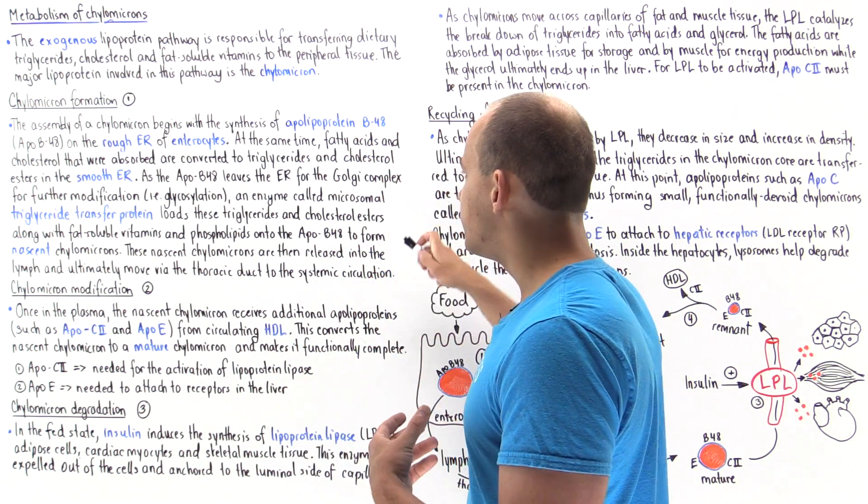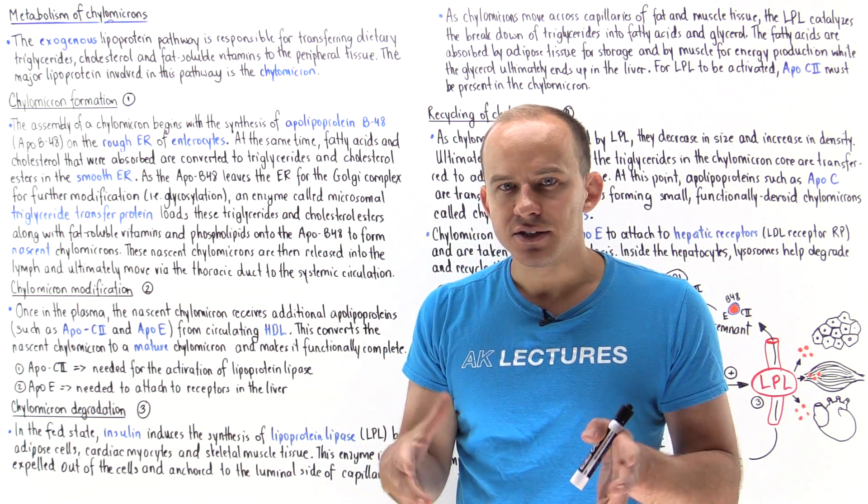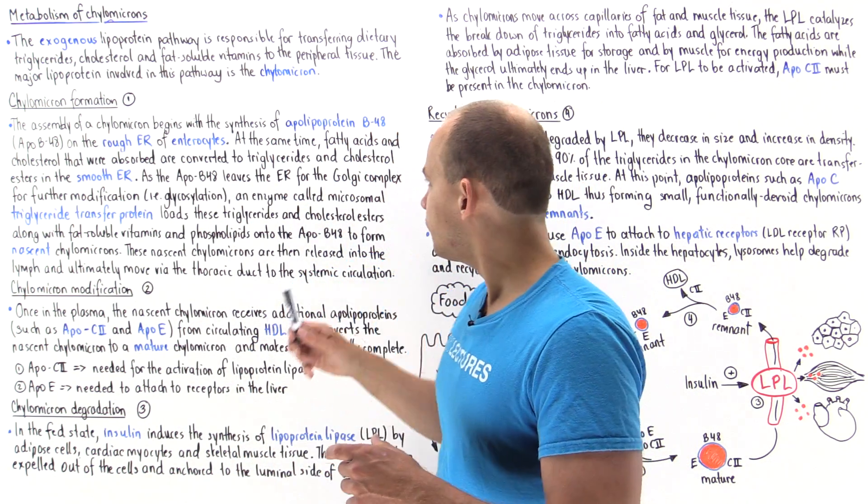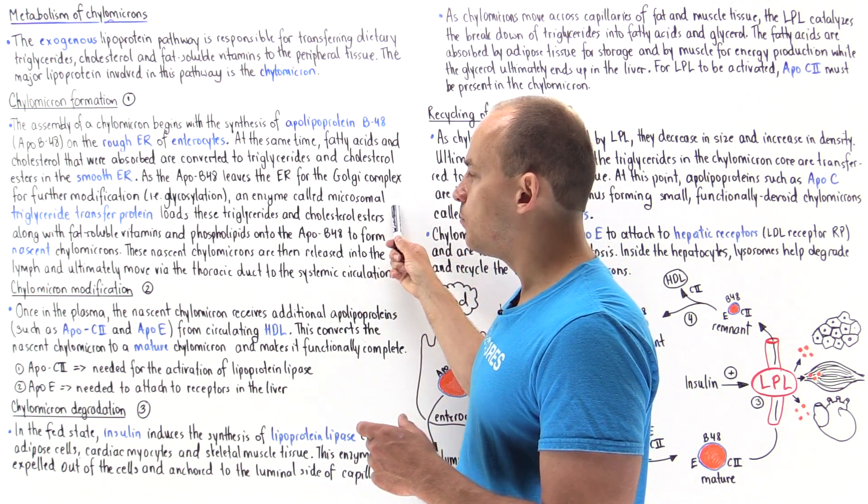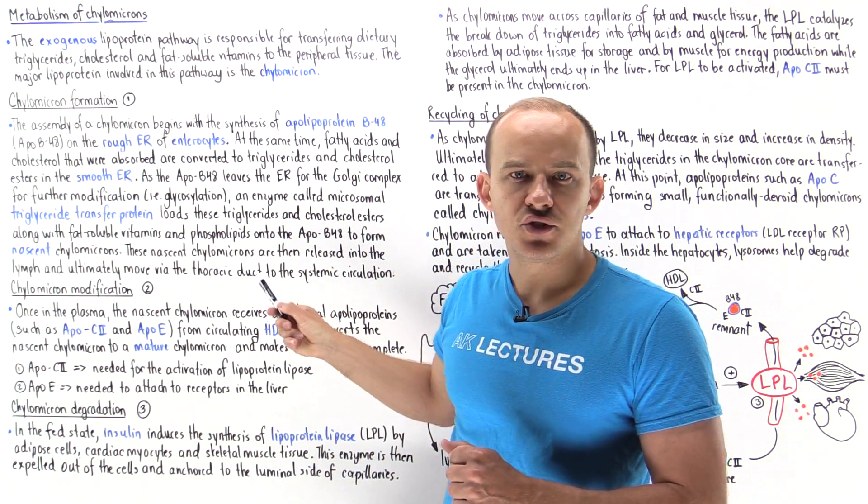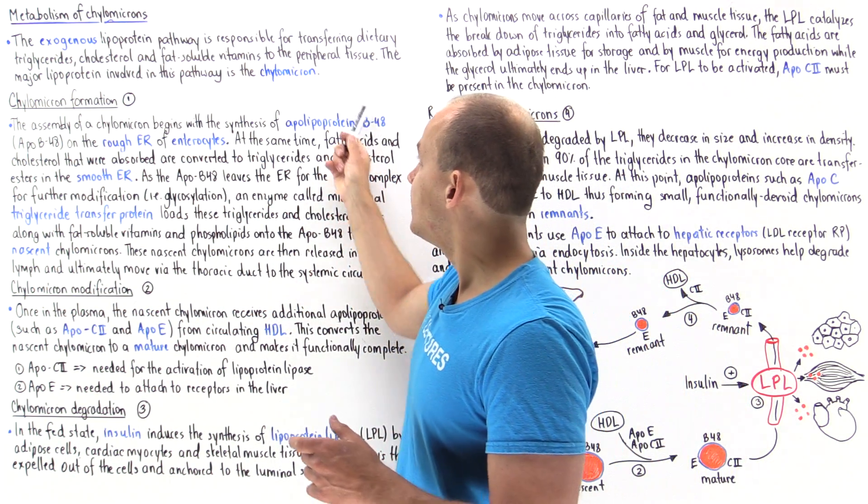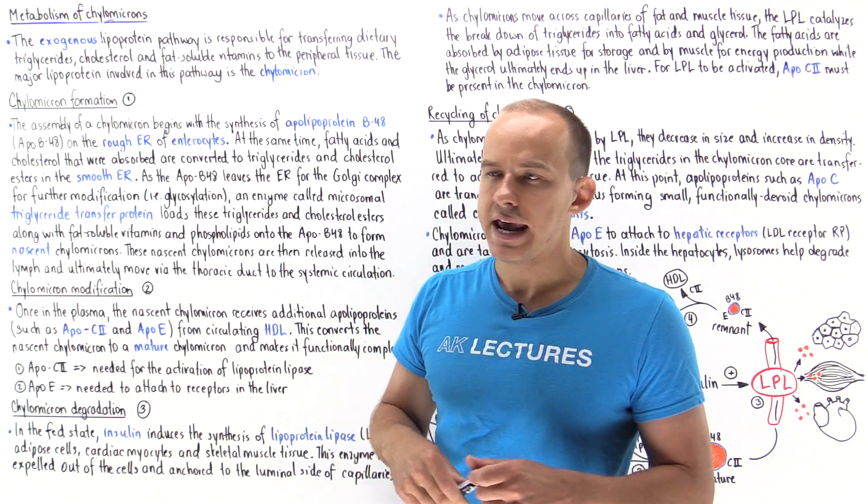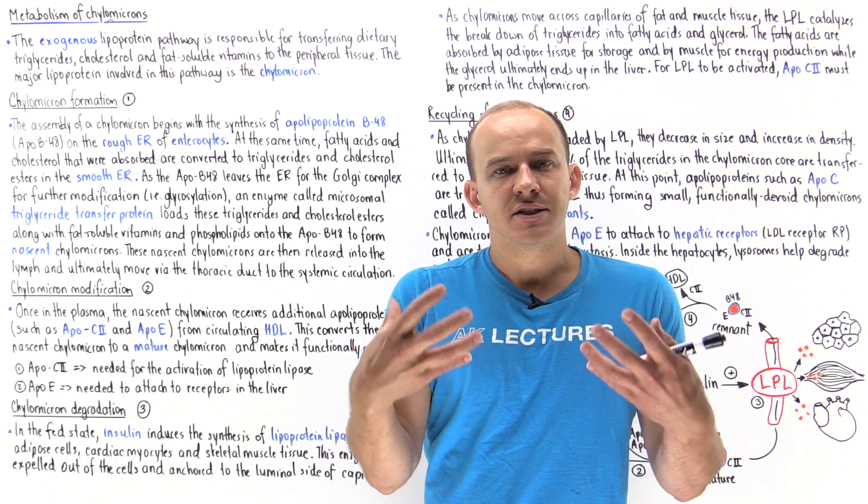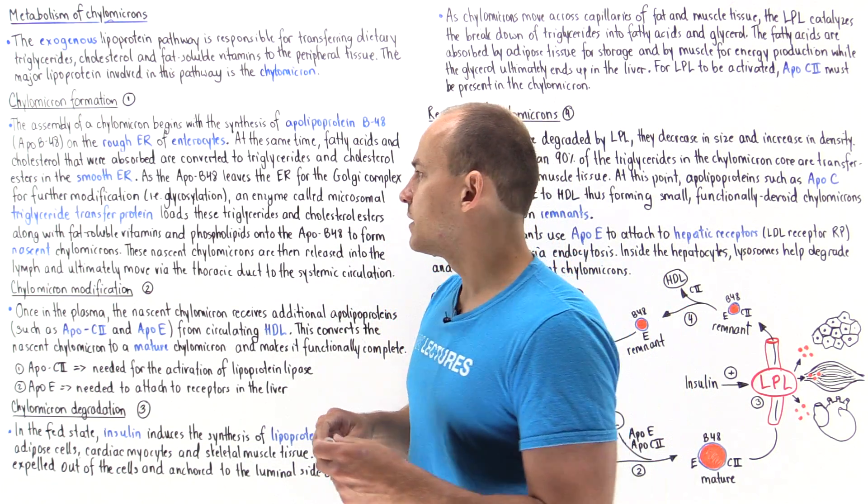Now an enzyme known as microsomal triglyceride transfer protein combines these lipids with the apolipoprotein B48. This enzyme is important because it loads the cholesterol ester, the phospholipids, the triglycerides, and the fat soluble vitamins onto this apolipoprotein B48. This apolipoprotein B48 is important because it gives the scaffolding and stabilizes the structure of the chylomicron.